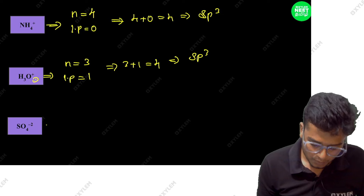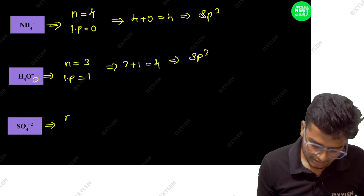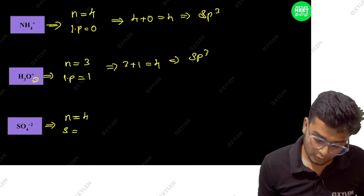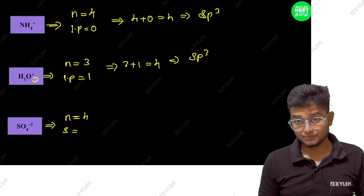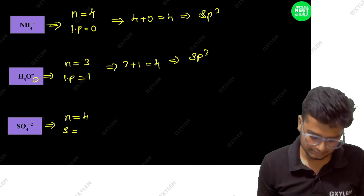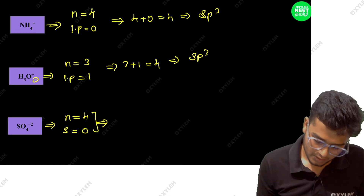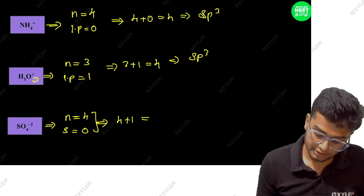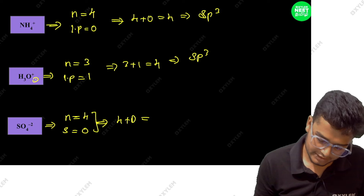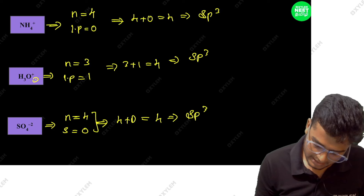Next, SO4 2 minus. Number of atoms: 4 oxygens, so 4. Lone pairs on sulfur: 0. So 4 plus 0 equals 4. That gives SP3 hybridization.